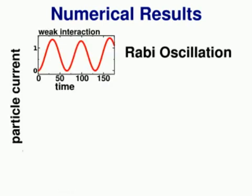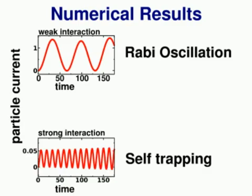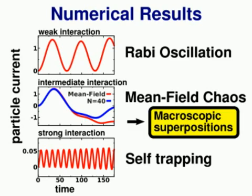In our numerical study we found three main dynamical regimes. Apart from the well-known Rabi oscillations and the self-trapping regime, we find a chaotic regime for intermediate interaction strength. In this regime the mean field predictions fail rapidly in time, as can be seen by a comparison of the mean field results with the numerical solution of the many-body system within our effective description. In our analysis we go beyond single particle observables and found strong indications for the creation of macroscopic superpositions in this chaotic regime.